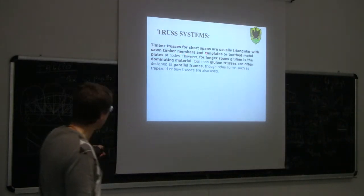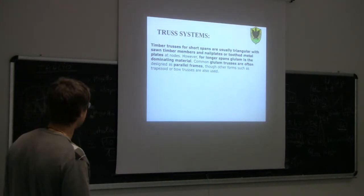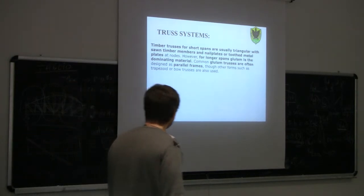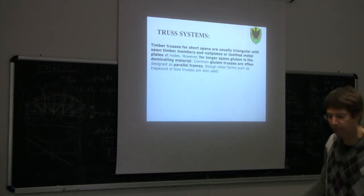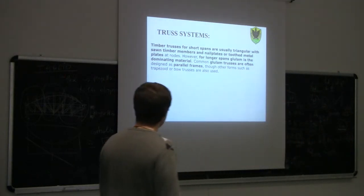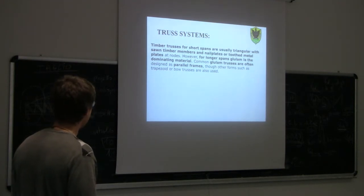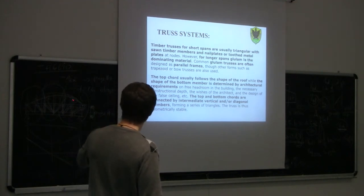For short spans — 5, 6, 7, 8, 9 meters — timber trusses are usually triangular, with timber members and toothed metal plate fasteners at nodes. For longer spans, we use mostly glue-laminated timber. Very often for longer spans we have a glulam member for the top cord and for the bottom cord.